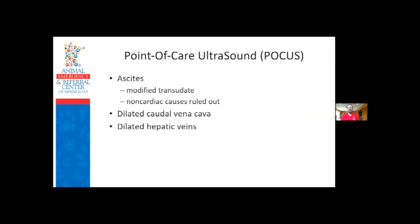If you have point-of-care ultrasound in your clinic, looking for evidence of right heart failure is helpful - specifically looking for ascites. Right heart failure happens from backup of blood from the right atrium through the caudal cava into the liver veins and belly. You often see a big liver with dilated liver veins and a big dilated caudal cava, all suggesting right heart failure, which puts pulmonary hypertension higher on the list.